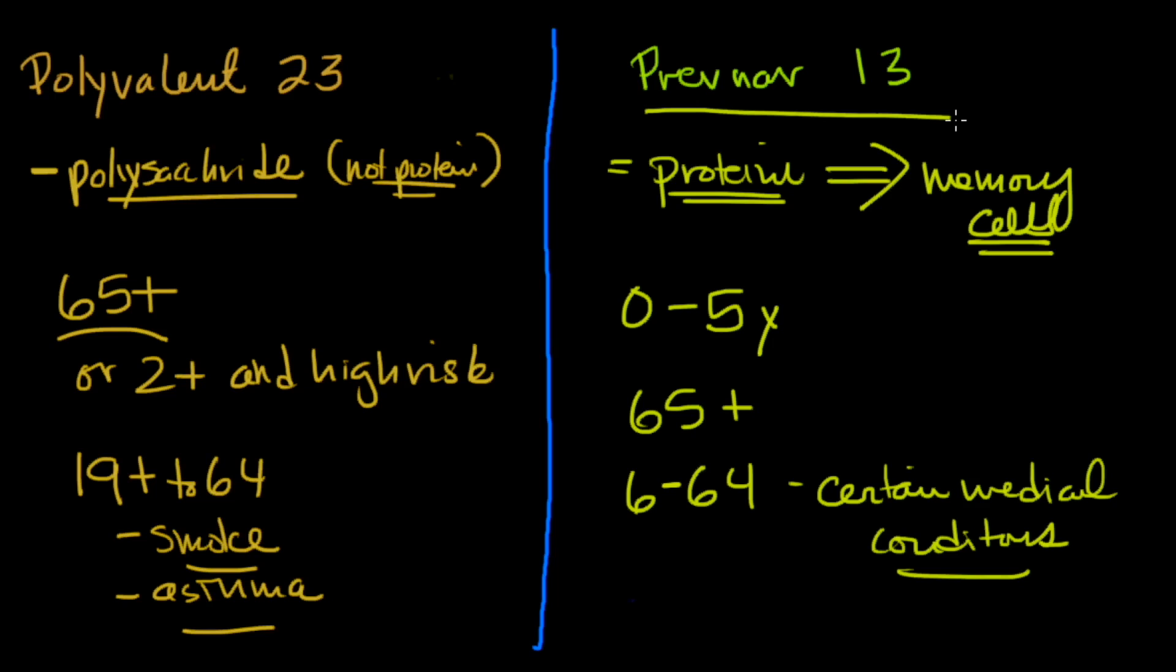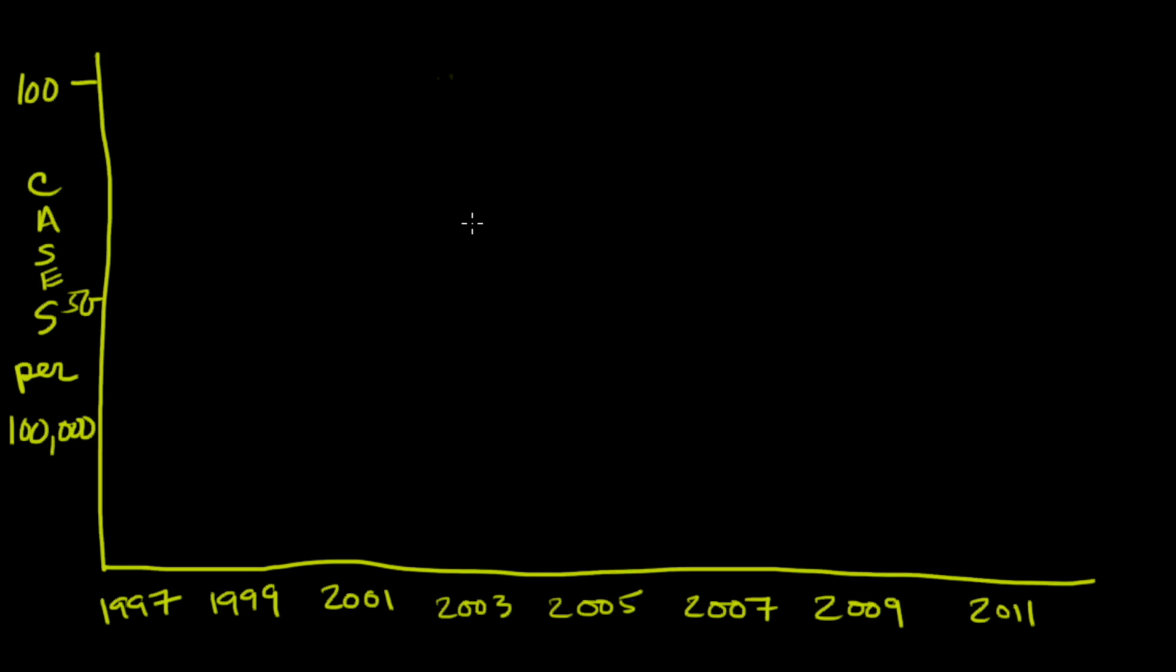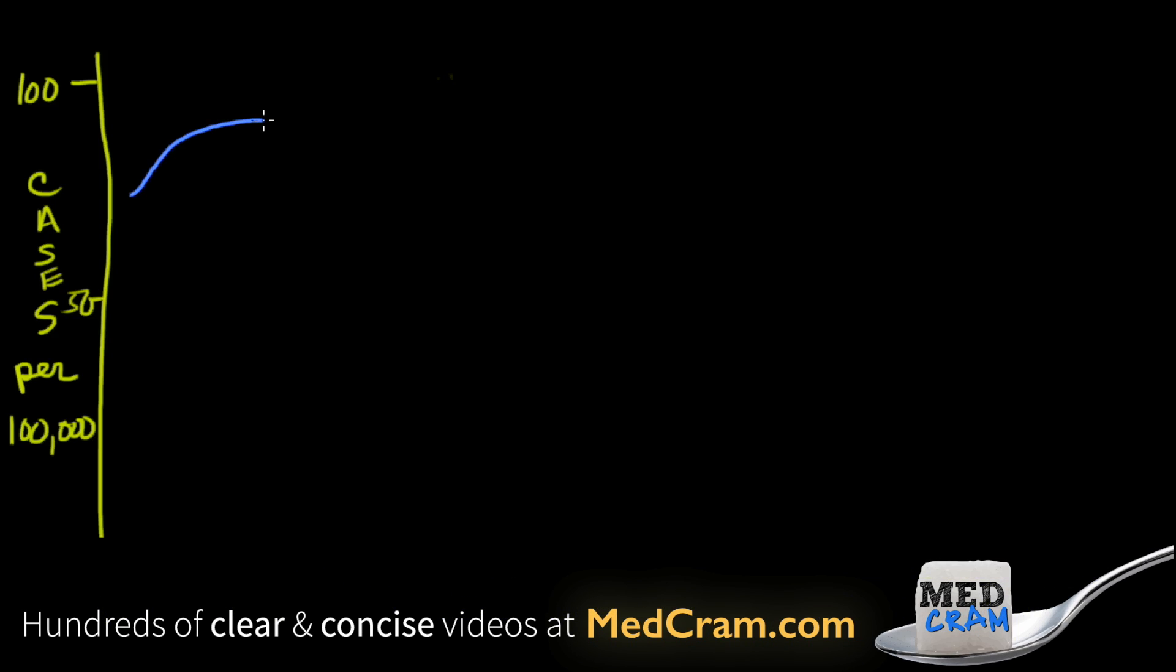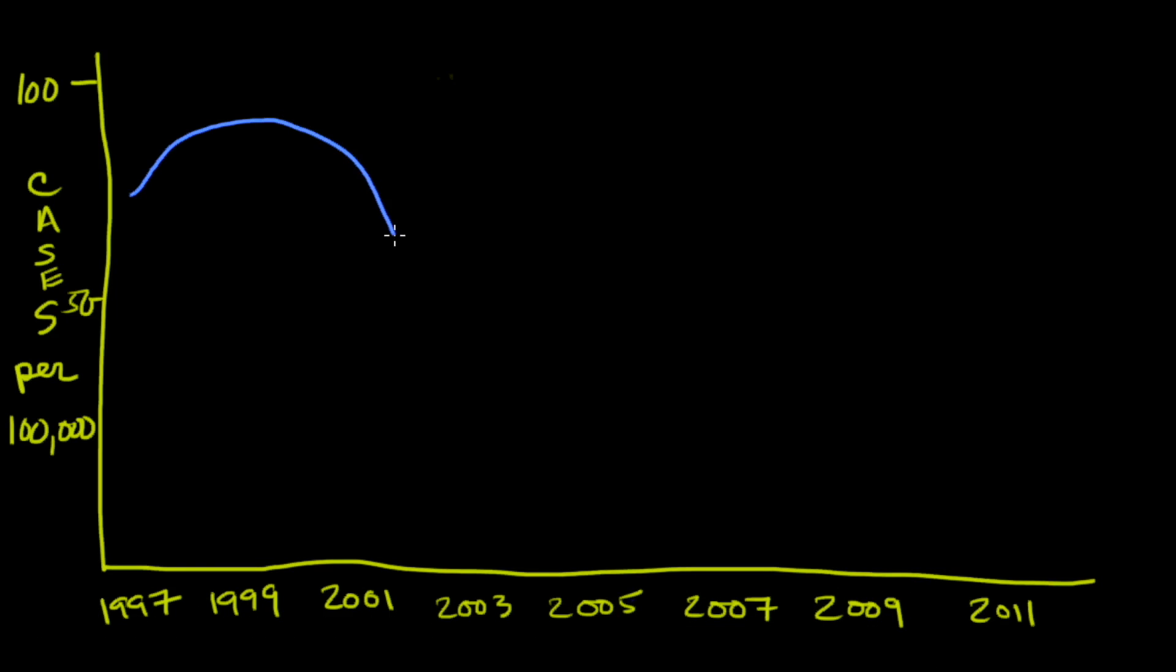What they found is that this Prevnar 13 has really done an amazing job at reducing the invasive pneumococcal rates. They started looking at the prevalence of invasive pneumococcal disease in the United States and tracked it from 1997. They looked at these kids who were less than 5 years of age, and they started around the 80 or so mark.